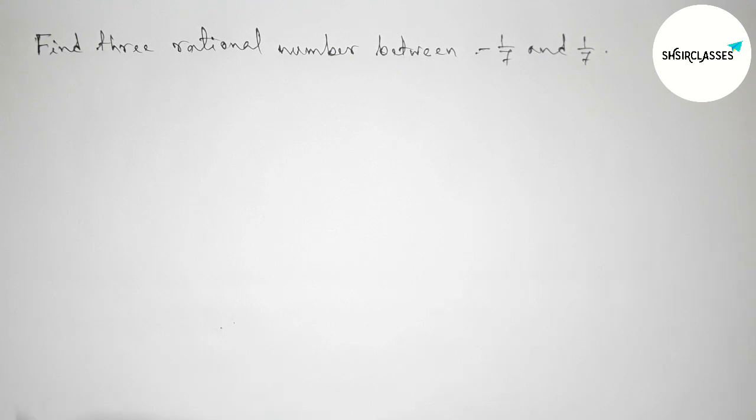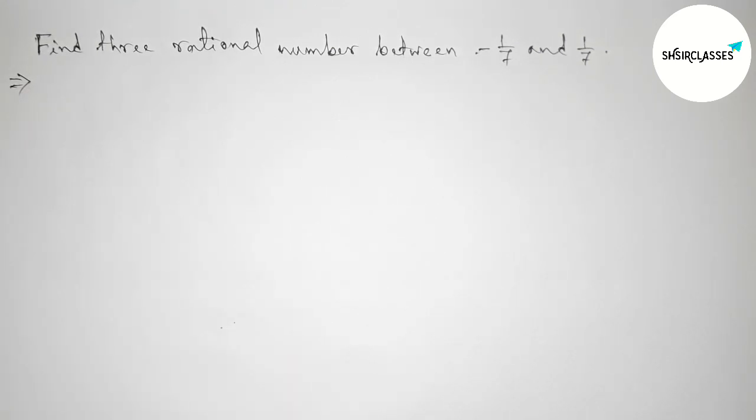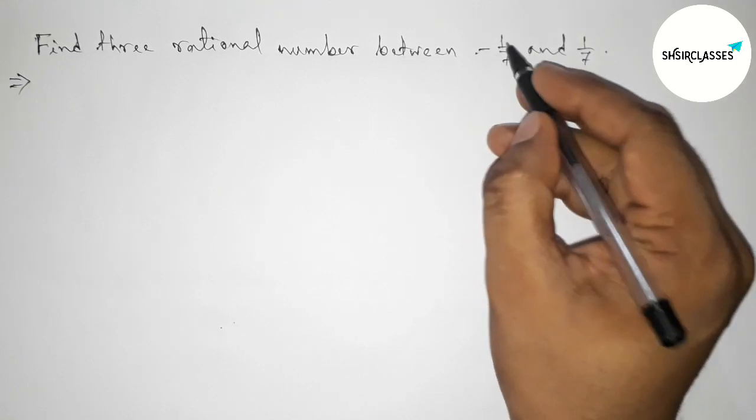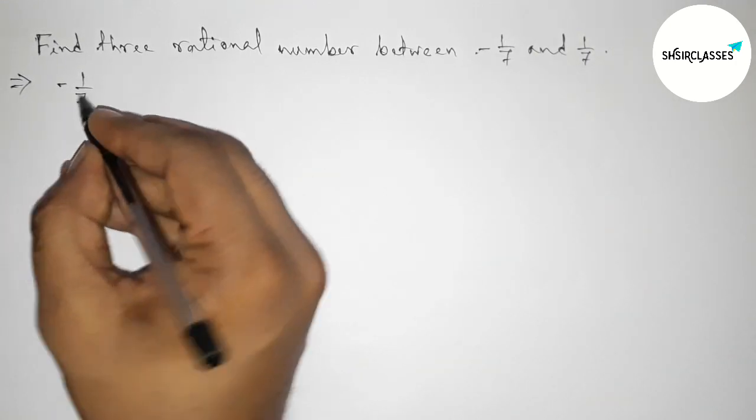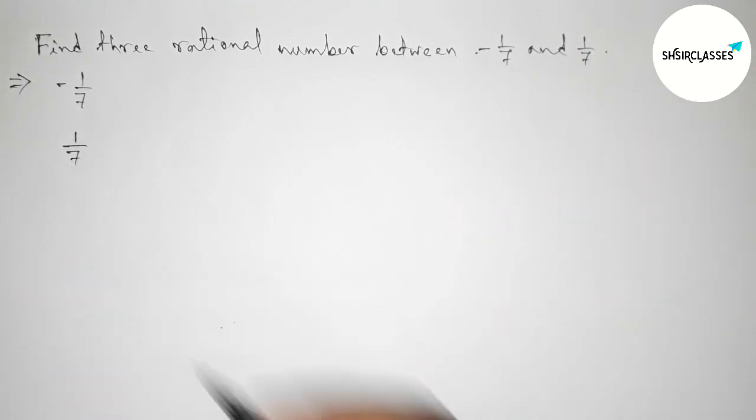First of all, let us solve this problem here. First of all, here given first rational number is -1/7 and second one is 1/7. Okay, so here both the denominators are same.